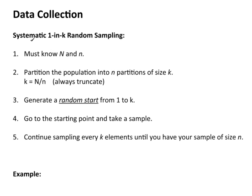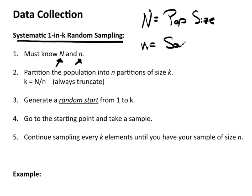Let's take a look at another sampling technique known as systematic 1 in k random sampling. Now you must know capital N and little n. As a reminder, capital N equals the population size and little n equals the sample size.